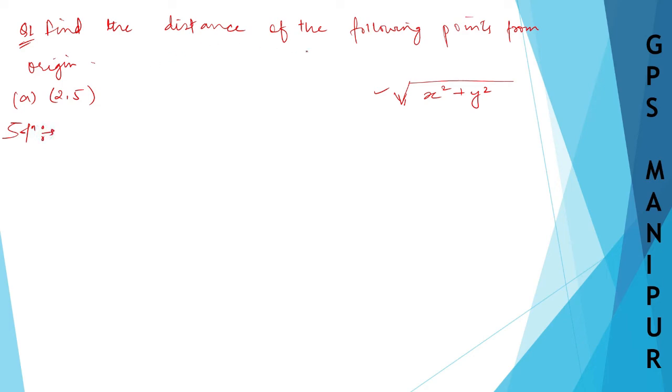So the distance of the following points from the origin - here x is equal to 2, the first number, and y is equal to 5, the second number.